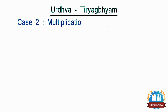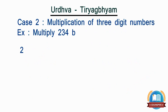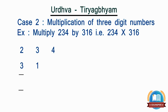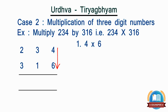Now let's take an example of a 3-digit number, i.e. 234 by 316. Here also the steps will remain the same as in the previous example but extended a bit. Step 1: multiply vertically the rightmost digit, i.e. 4 into 6, which becomes 24. We will retain 4 and carry over 2.